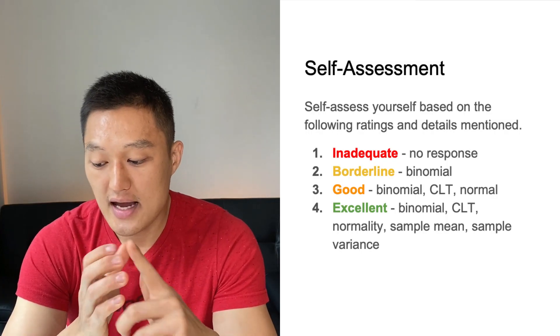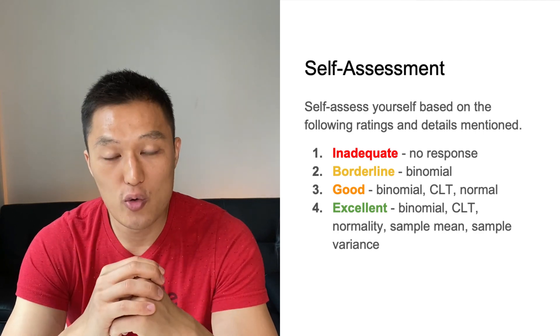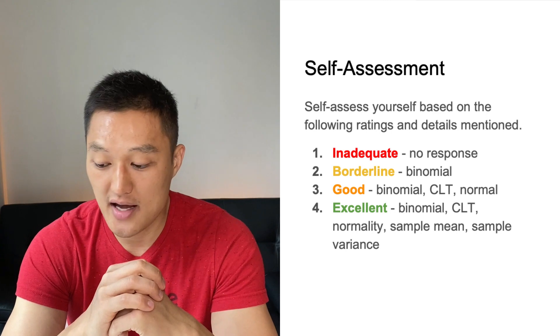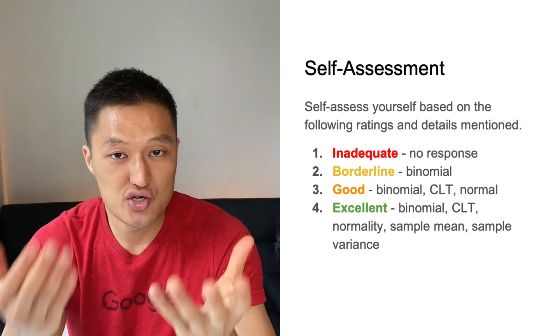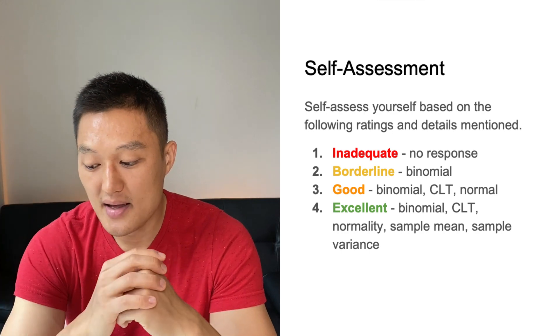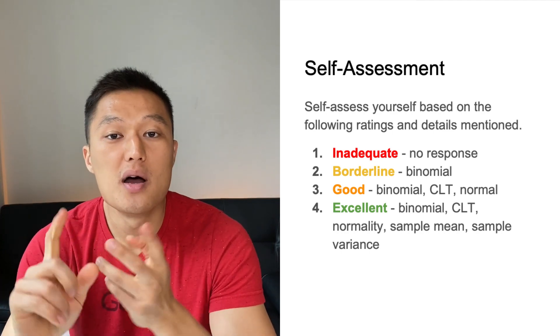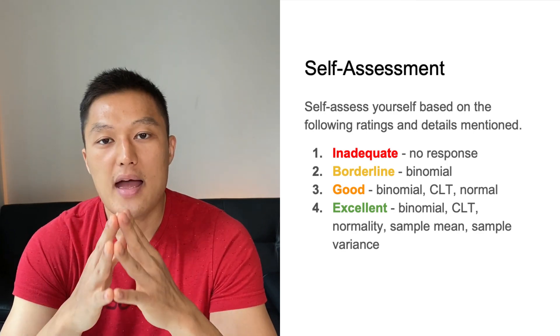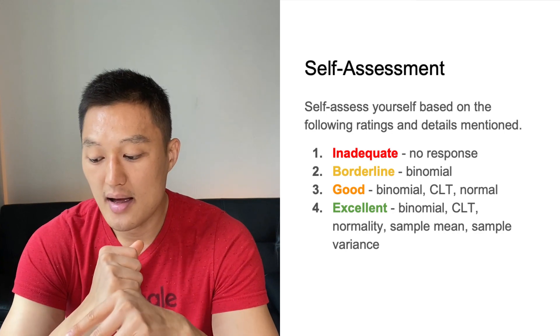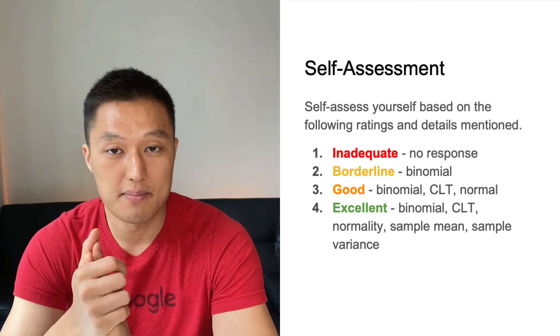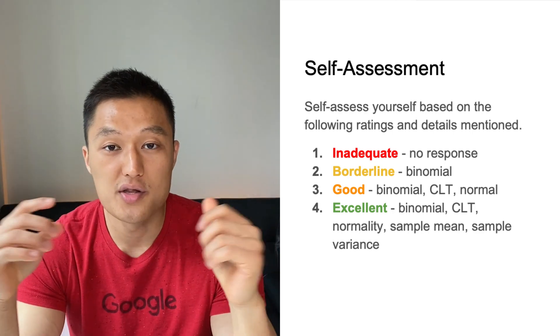When practicing, self-assess your response using a rubric with four ratings: inadequate, borderline, good, and excellent. No response is inadequate. Mentioning binomial alone is borderline. Bringing up CLT and normality gets you to good. An excellent response includes all elements: binomial, CLT, normality, sample mean, and sample variance. Self-assess and drop a comment below with your rating.